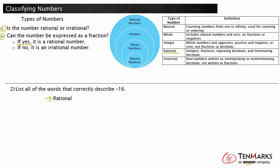We know that natural numbers, whole numbers, and integers are all rational, but not all rational numbers are natural numbers, whole numbers, or integers. We need to use our chart to determine where negative 16 fits. This cannot be a natural or whole number because they do not include negatives. Integers do include negative numbers, so negative 16 is a rational number and an integer.